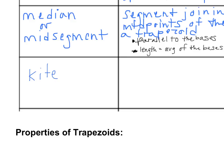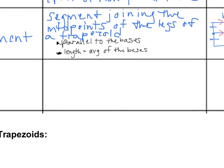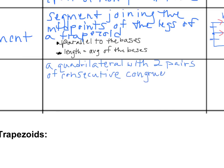Last definition we need is for kite. And this is basically what you think of when you think of a kite like flying a kite, but the technical geometric definition is a quadrilateral with two pairs of consecutive, congruent sides.